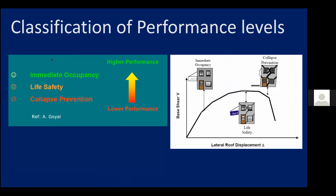The summary of performance level classification is: Immediate Occupancy, Life Safety, and Collapse Prevention. If you target Immediate Occupancy, you are going towards higher performance. As you go down to Collapse Prevention, it is lower performance. For a very important building, we need to look at higher performance levels. It depends on the owner to choose which performance level should be targeted so that he can make decisions on cost.